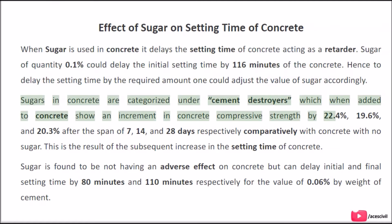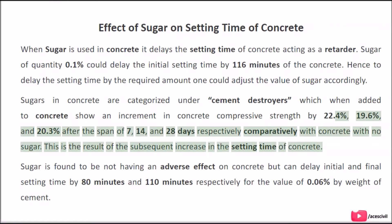Sugars in concrete are categorized under cement retarders which, when added to concrete, show an increment in concrete compressive strength by 22.4%, 19.6%, and 20.3% after the span of 7, 14, and 28 days respectively, comparatively with concrete with no sugar. This is the result of the subsequent increase in the setting time of concrete.